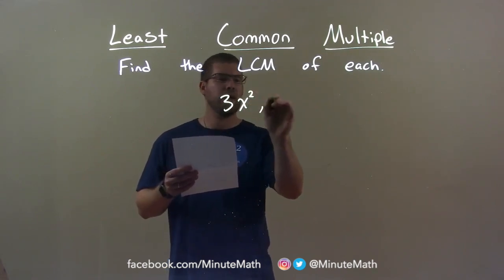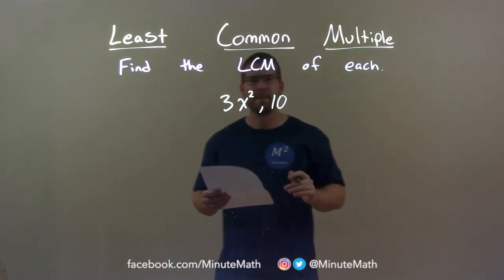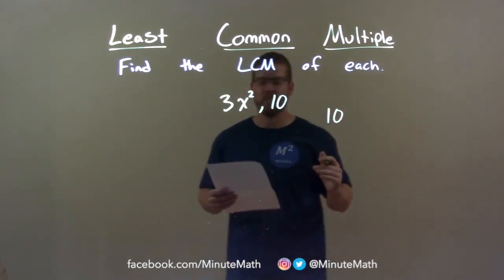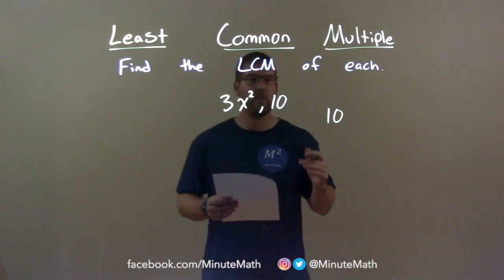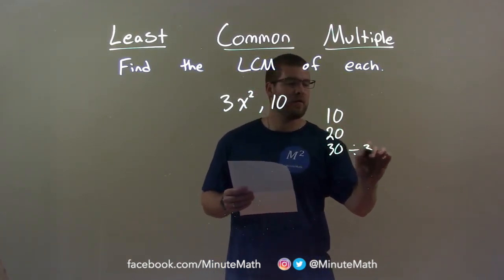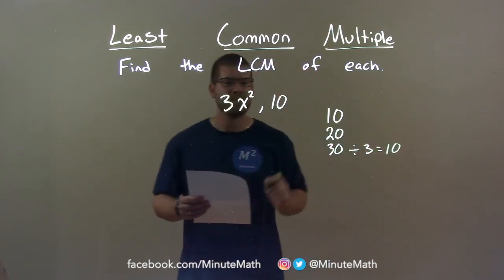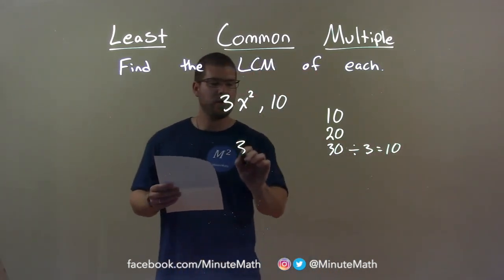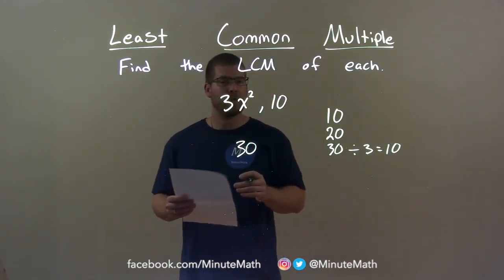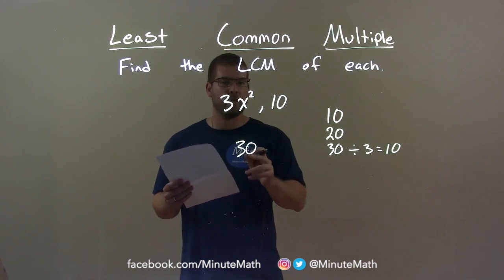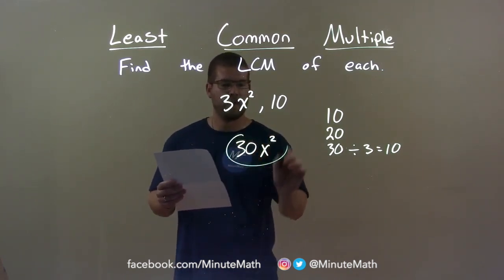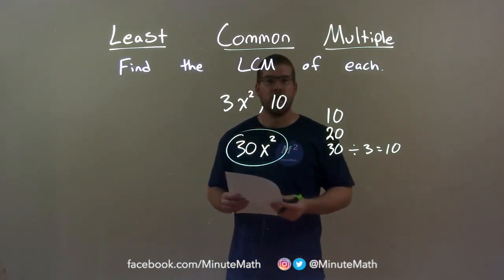3x squared and 10. First I look at the numbers — 10 is the largest of the two. I go through its multiples and find which one is divisible by 3. 10 is not and neither is 20, but 30 is divisible by 3, and that's going to be 10. So 30 is my number. Now for the variables: we have an x squared and nothing, so we just have to bring down the x squared. My final answer is just 30x squared.